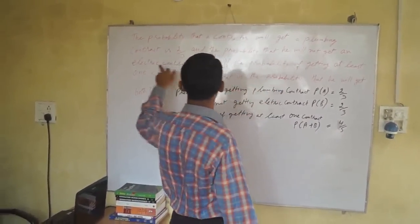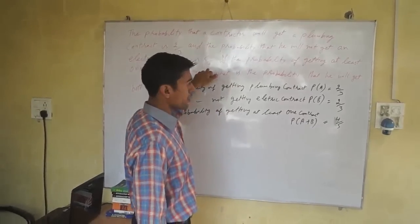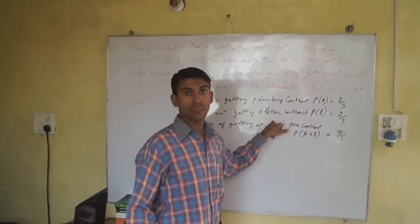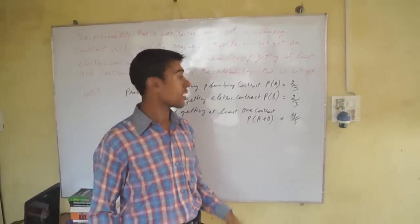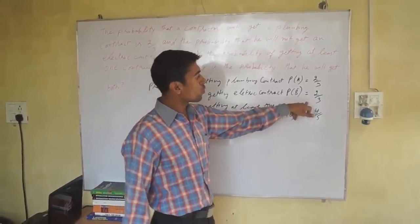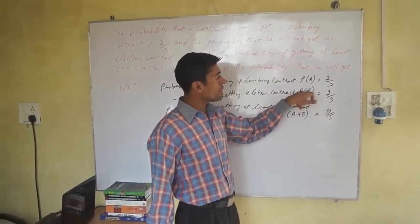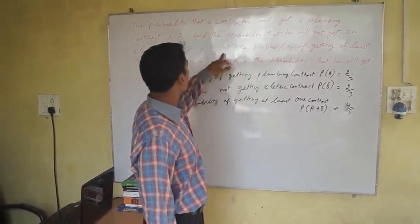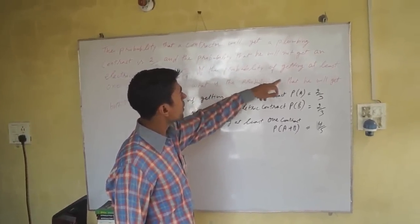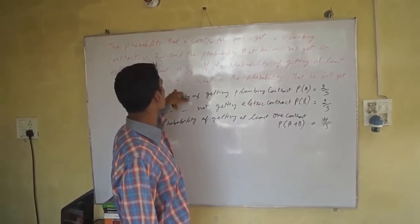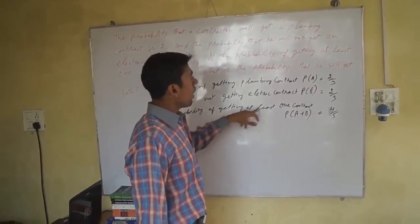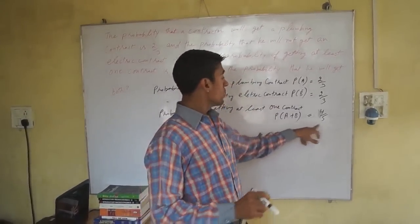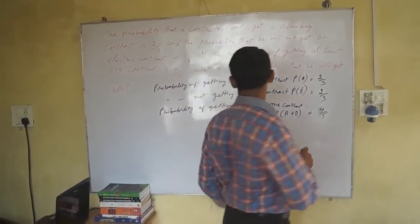The probability that he will not get an electric contract is 5/9. So the probability of not getting the electric contract, P(B'), is 5/9. And the probability of getting at least one contract is 4/5.